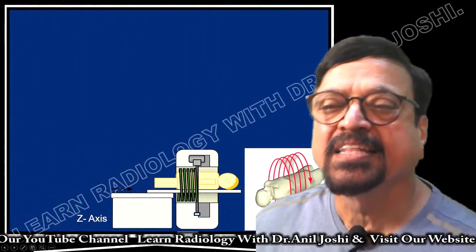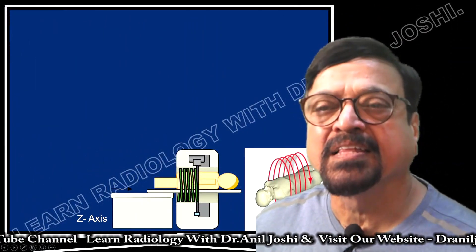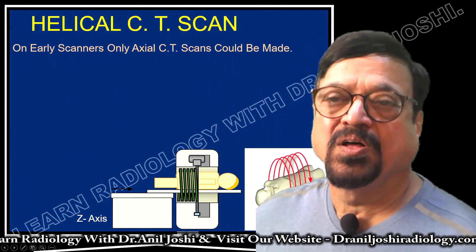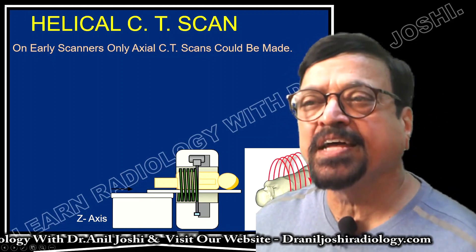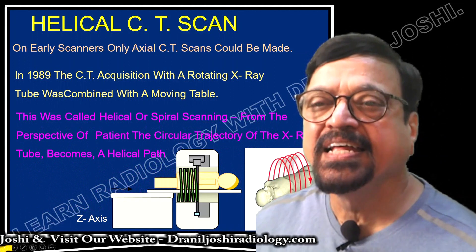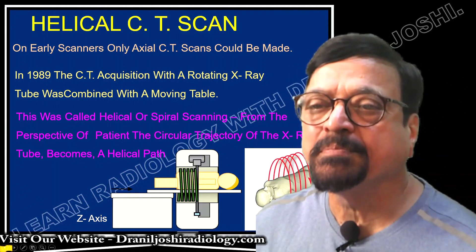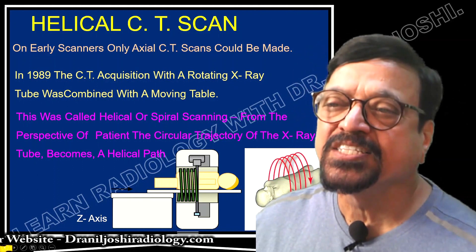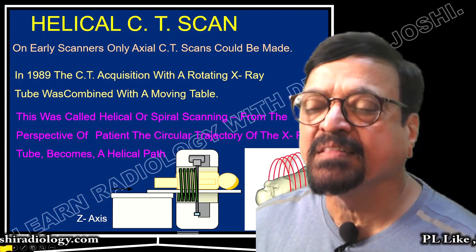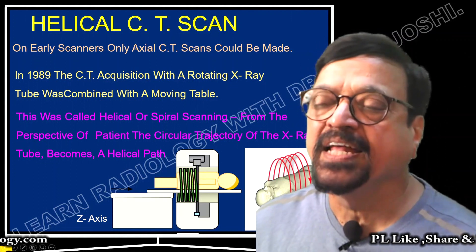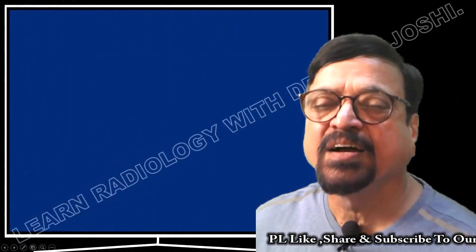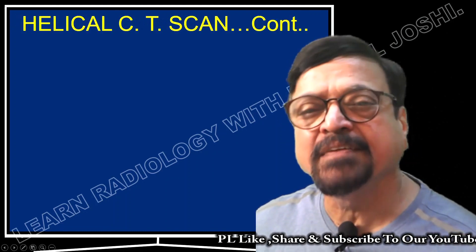Now let's come to helical scanning. Speed, axial resolution, and multi-planar reconstruction were all improved. On early scanners only axial CT scans were possible — the EMI scanners. In 1989, CT acquisition with the rotating X-ray tube was combined with a moving table. This was called helical or spiral scanning. From the patient's perspective, the circular trajectory of the X-ray tube becomes a helical path. You can see that the tube is continuously moving and the patient is continuously moving — there is no stopping. Because it is volumetric data, reconstructions in any plane are possible.